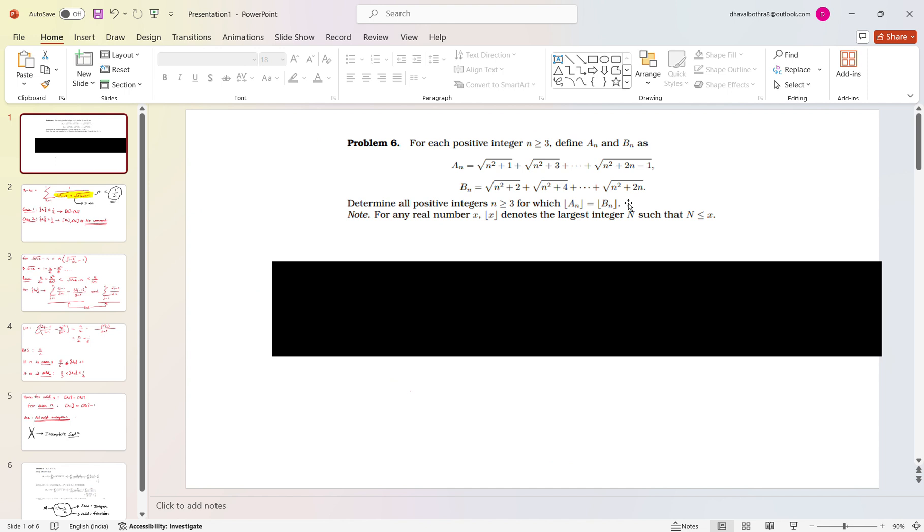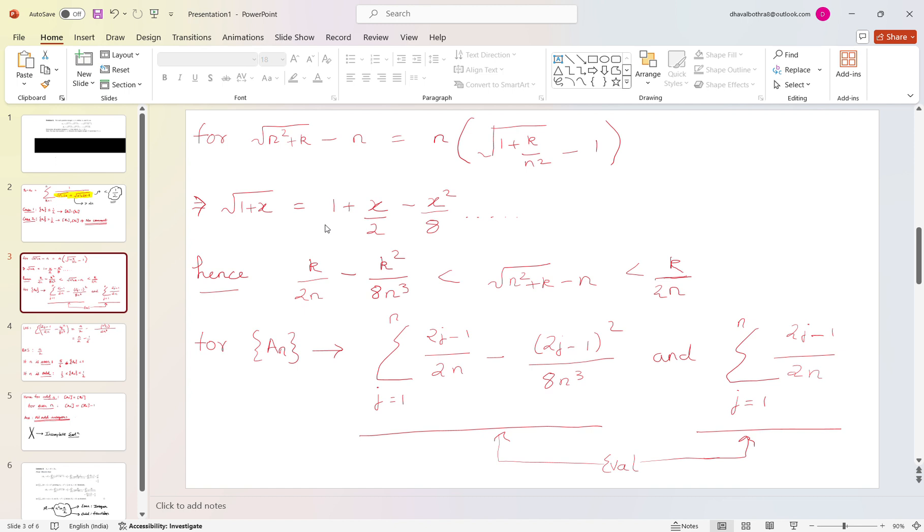The term will be n squared plus 2n plus 1 and the square root value is less than that. So I just tried to find what is n plus that something. So I had done the difference and then taken the n common and then used the fractional binomial.